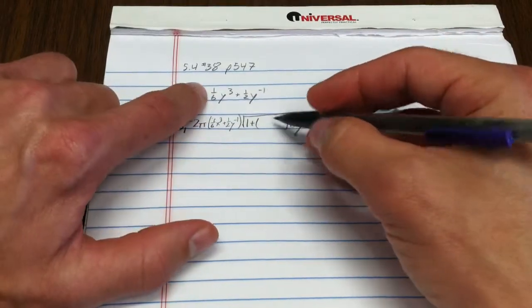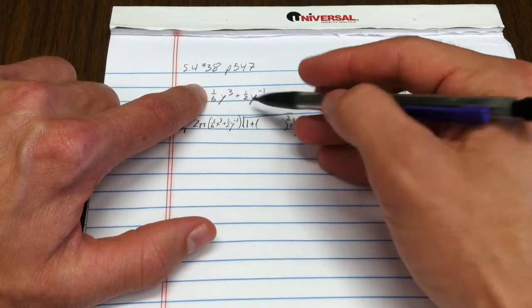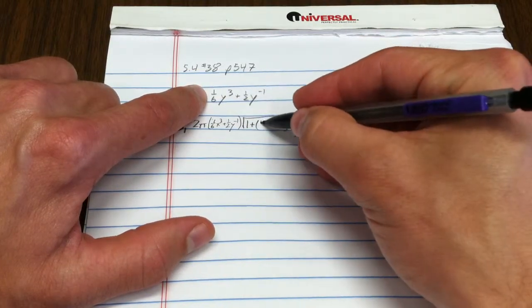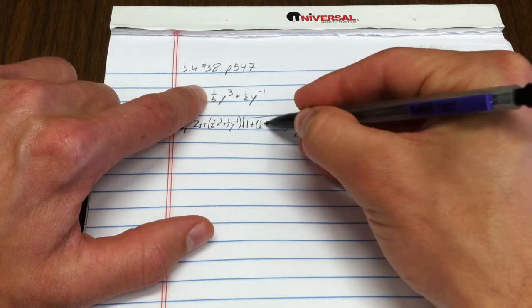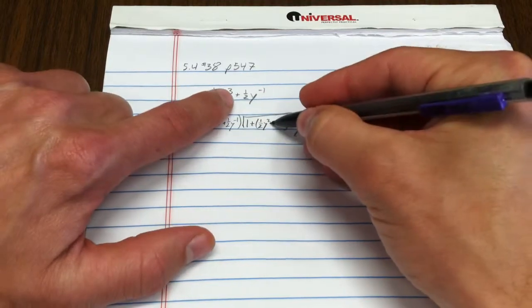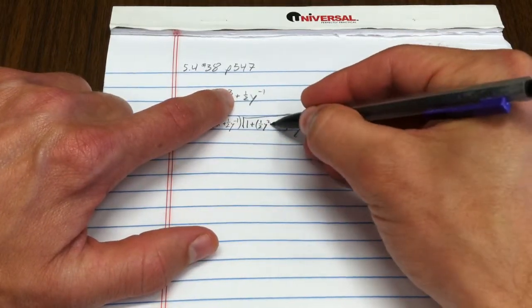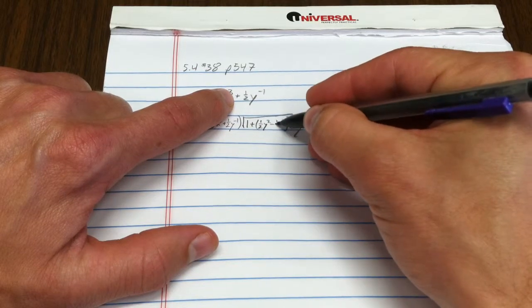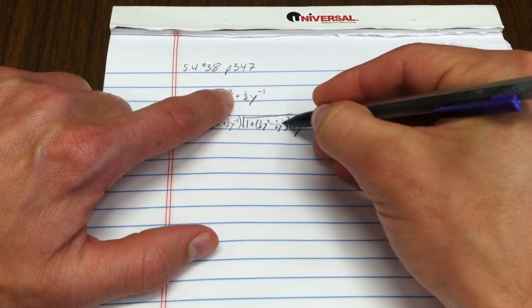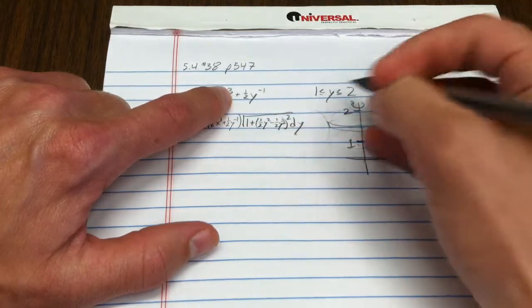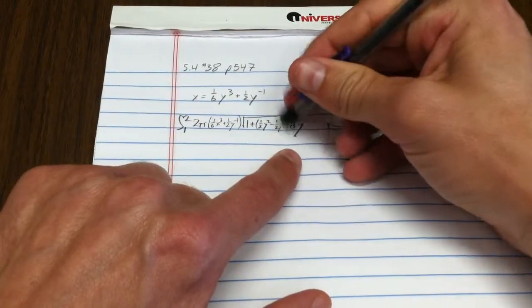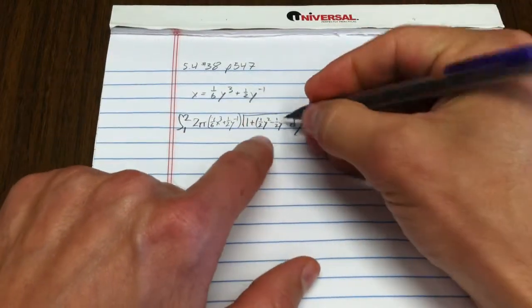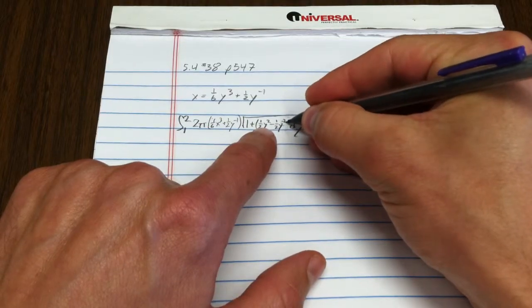Now the derivative of this: the derivative of y cubed is three y squared, so this is one-half y squared. This becomes, when I take the derivative, minus one-half y to the negative two. That's a little scrunched there, but it's a really key form. Can you see the y squared and then the y to the negative two?